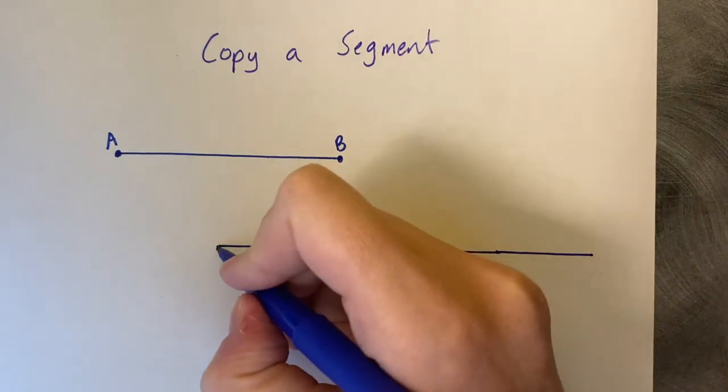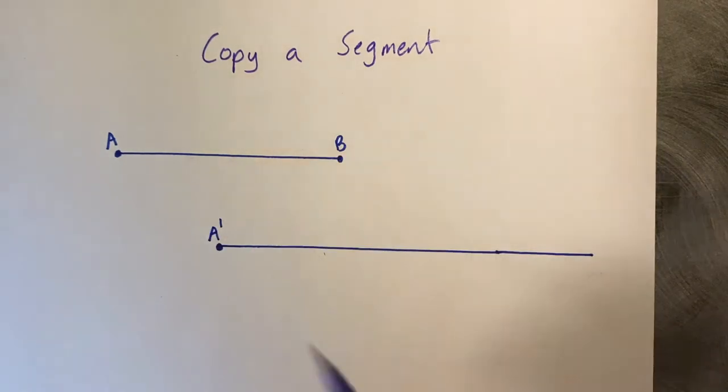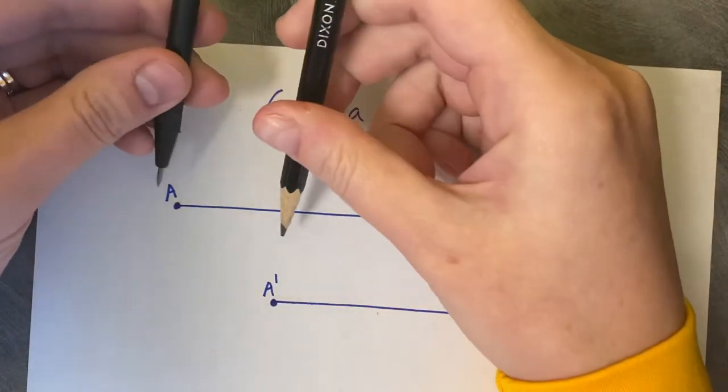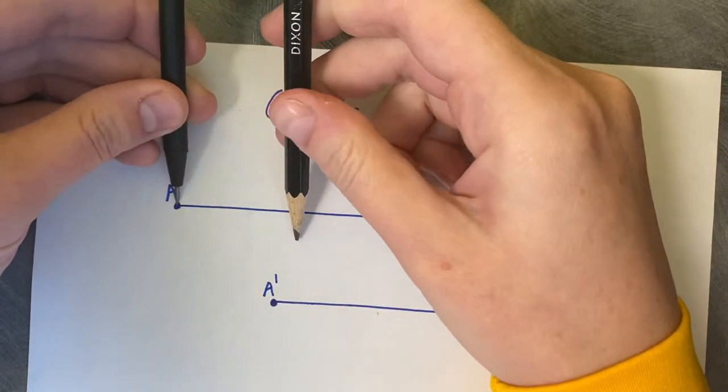Choose the end of your line to become A' so that we can match this up. Now take your compass and put your anchor on one end of your segment.